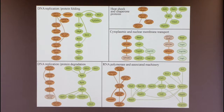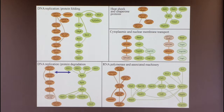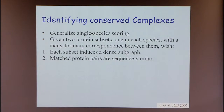A second insight is function prediction. For example, a protein unknown at the time was placed in interaction with the polymerase of H. pylori and opposite proteins involved in DNA replication in yeast, suggesting it also takes part in DNA replication. A third insight is that alignments can link together processes not previously known to interact — in this case, DNA replication and protein degradation.